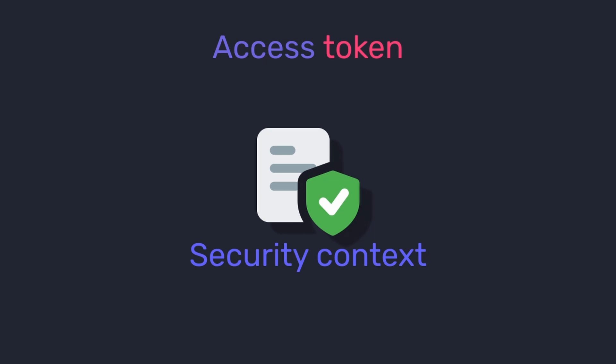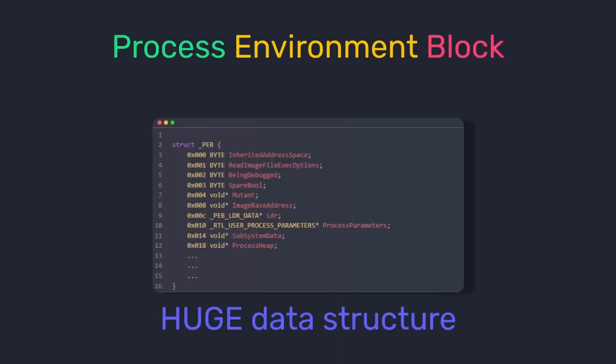The access token defines the security context of a process, which is used by the operating system to check the identity information of a process — such as which user it belongs to and what privileges it has. The Process Environment Block, or PEB, is a large user mode data structure which contains a lot of information about the process, such as what arguments were provided when launching the process, what modules or DLLs are loaded, and whether it is being debugged or not.